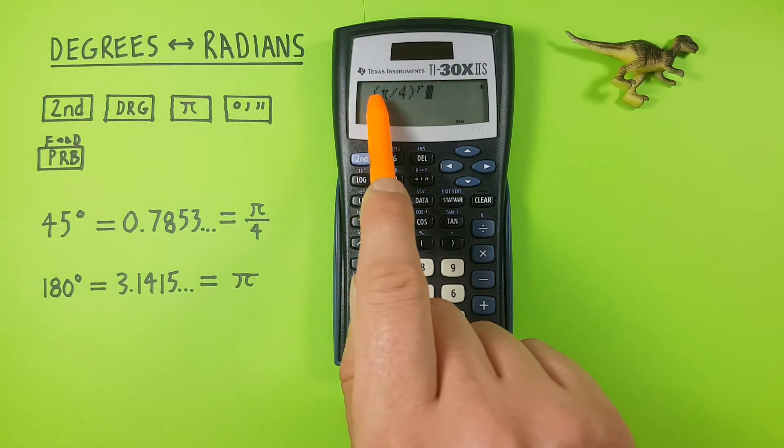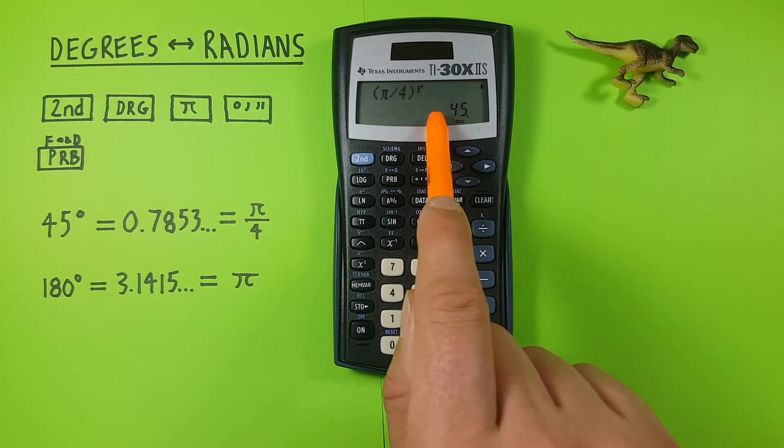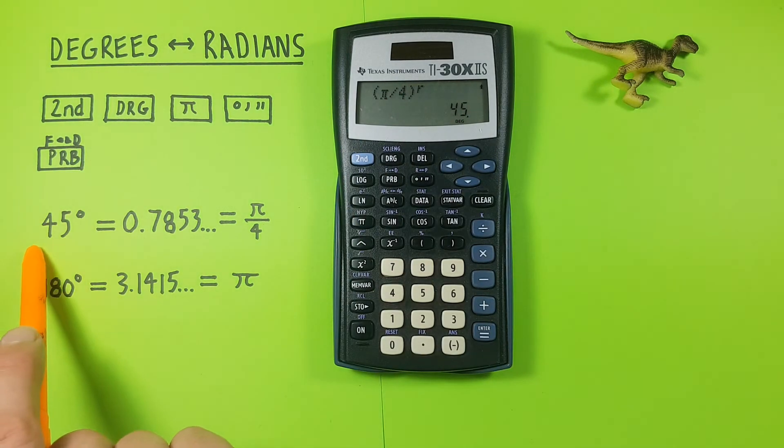Now we have pi over 4 radians. Press enter and we get a result of 45 degrees which is correct.